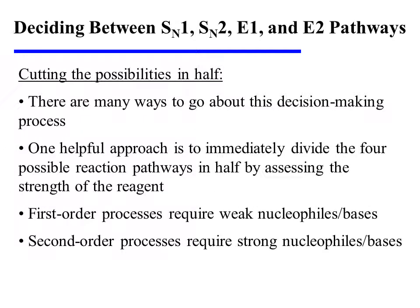There are many ways to go about this decision-making process, but one helpful approach is to begin by dividing the four possible reaction pathways in half simply by assessing the strength of the reagent. First-order processes require weak nucleophiles or bases, whereas second-order reactions necessitate strong nucleophiles and bases.